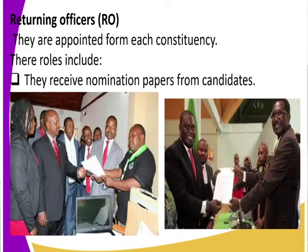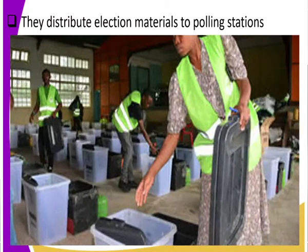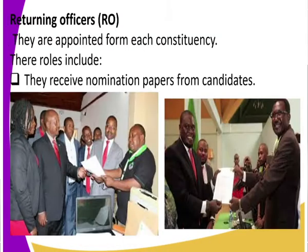You can see a returning officer wearing an IEBC t-shirt with the IEBC logo, holding a paper. You can see Mwangi Wairian, governor of Muranga, receiving his nomination paper. In the second image, you can see a returning officer in specs giving nomination papers to Nairobi senator Johnson Sakaja. That is the work of returning officers — they receive and give out nomination papers to candidates.